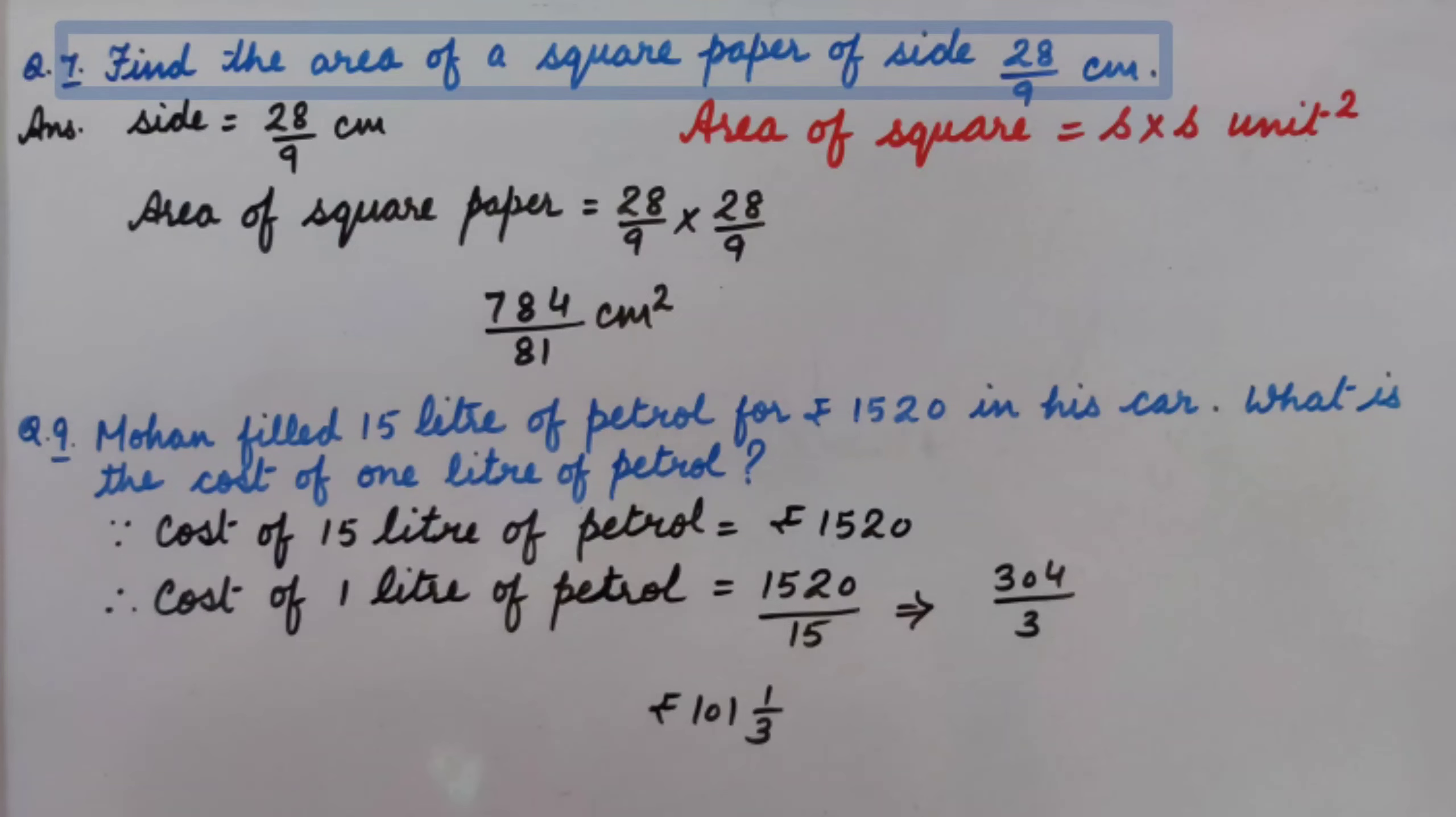Find the area of a square paper of side 28 upon 9 cm. First of all we will write the information that is side equal to 28 upon 9 cm.